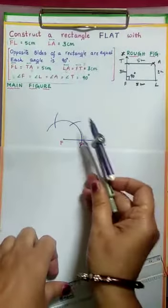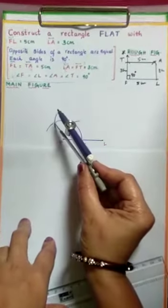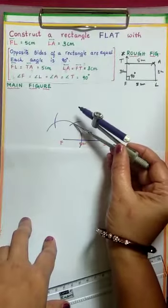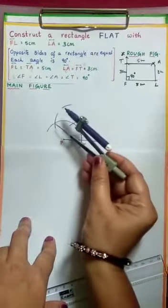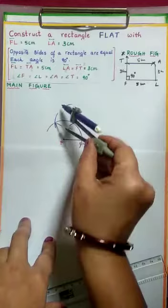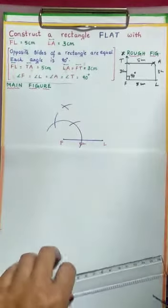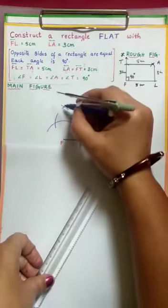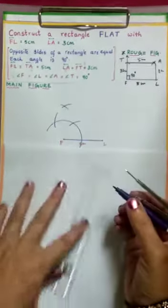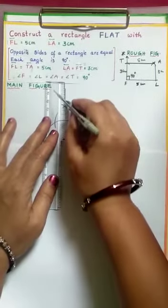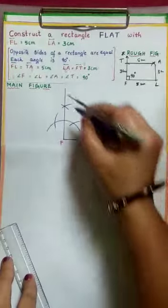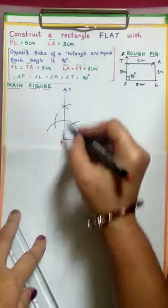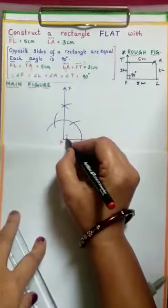As we know that 60 plus 30 is 90, so what we have to do is bisect the second 60. Taking this point as center, draw an arc. From this point, cut this arc. Where these two arcs intersect, join from F and draw a ray. Name it X. Angle XFL measures 90 degrees.